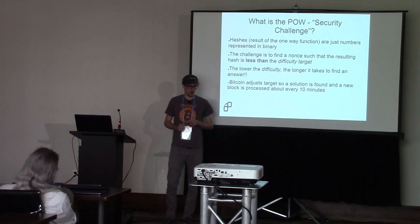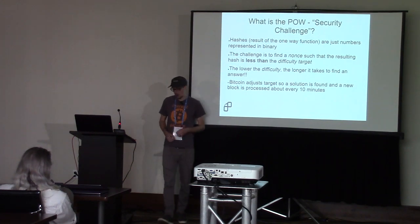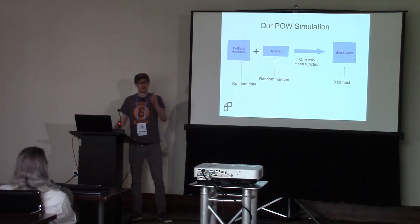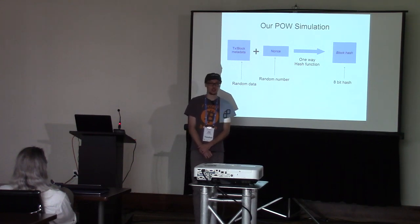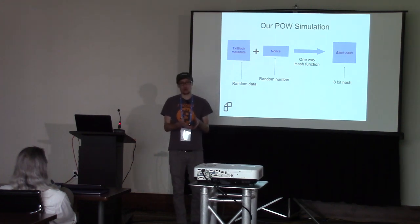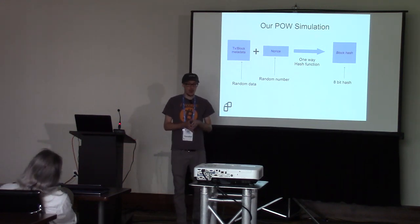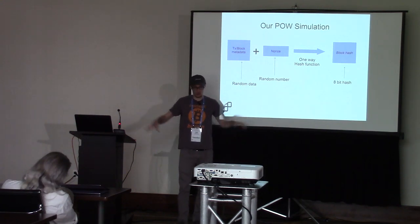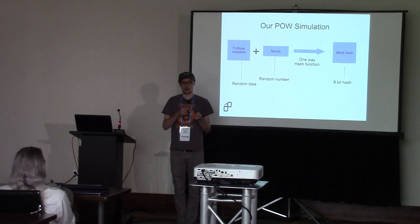Bitcoin adjusts the difficulty target so that on average a proof of work solution is found and a new block is processed every 10 minutes. The difficulty adjustment is actually built into the protocol itself — the Bitcoin software automatically adjusts that number based on the other variables on the network. The 10-minute block time is kept constant; that varies from blockchain to blockchain — for example, Ethereum is on the order of about every 15 seconds.